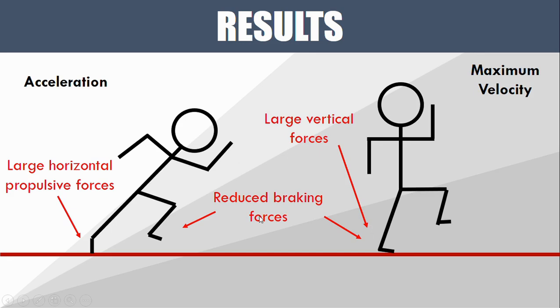The other thing they found was during both the acceleration and maximum velocity phases, there were less braking forces. This is quite intuitive—if we have less braking forces, we're able to minimize how much we're slowing ourselves down and therefore allow more of our force application to be forward rather than backward.